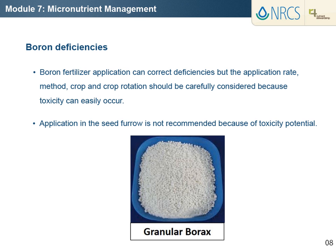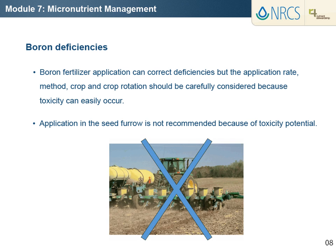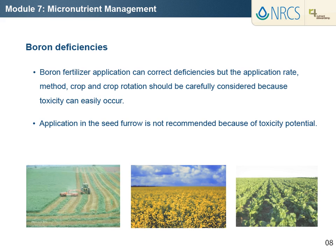Boron fertilizer application can correct deficiencies, but the application rate, method, and crop should be carefully considered because toxicity can easily occur. Banded application in the seed furrow generally is not recommended because high boron concentration can be toxic to seedlings and can also result in injury to developing plants. Crops more sensitive to boron deficiency include alfalfa, canola, and sugar beet. Many crops are sensitive to boron toxicity.